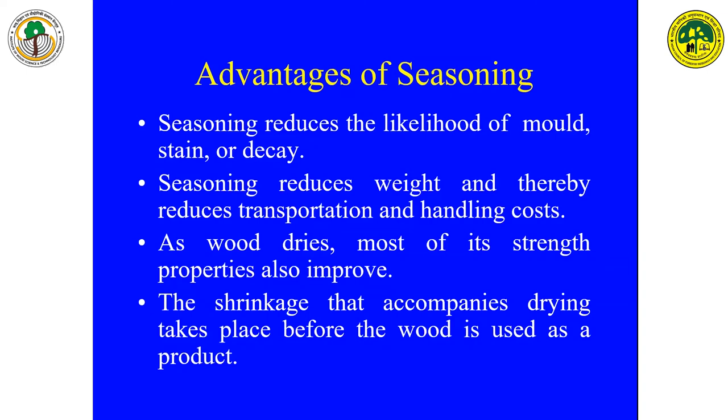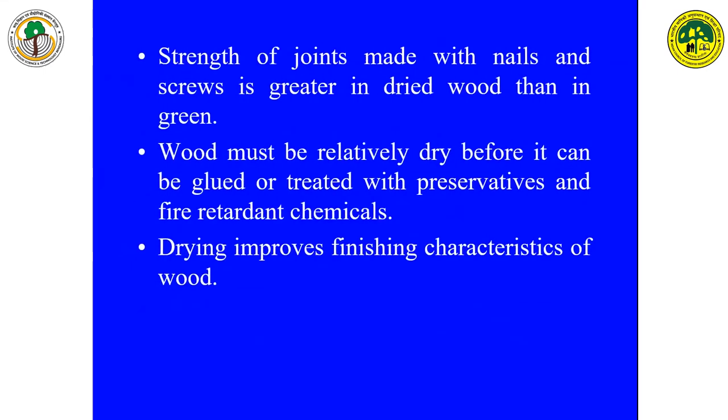Shrinkage that accompanies drying takes place before the wood is used as a product. In wood science and technology, we say a wooden product is best when its dimensional stability is very high, meaning dimensions are not changing or fluctuating with corresponding fluctuations of temperature and relative humidity in the surrounding atmosphere. Once we season the wood, the loose hydroxyl sites which are otherwise present in the amorphous region of cellulose chains and microfibrils are removed to a greater extent. Due to absence of OH groups in the amorphous region, wood becomes dimensionally stable.